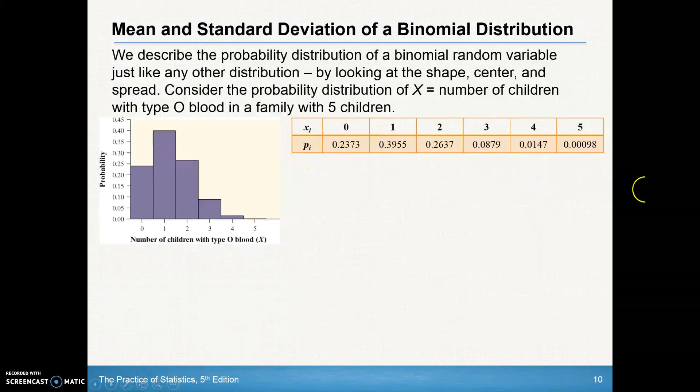This problem deals with five children and the probability of having type O blood. This was the probability of having zero kids amongst five have type O blood. This is the probability of one out of the five having type O blood. Having one out of five could be the first, second, third, fourth, or fifth child, so there's five different ways of getting that, and that's how they add up these different probabilities.